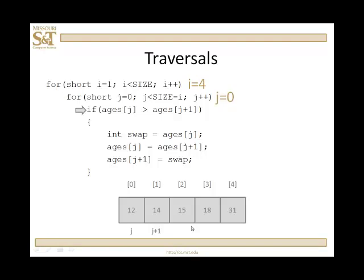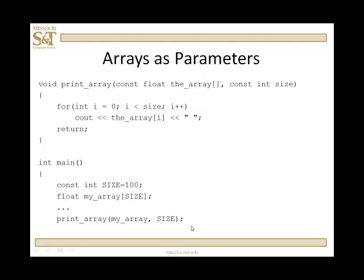Increment i to four. j equal to zero. Is 12 bigger than 14? The answer is no. Increment j to one, and I'm done. Increment i to five, and I am done. And this is bubble sort.